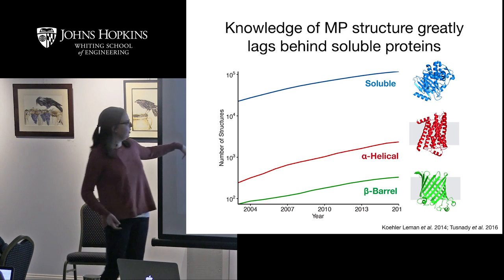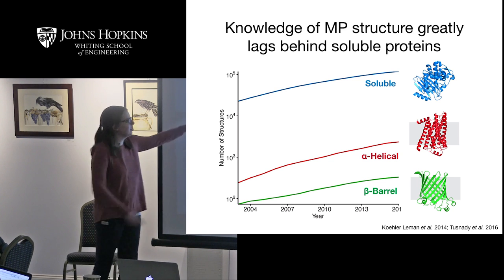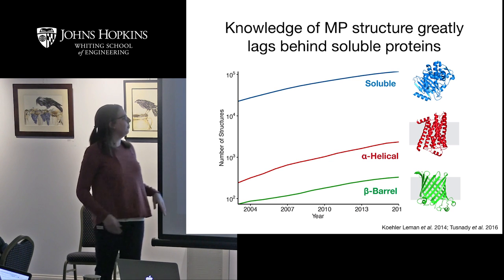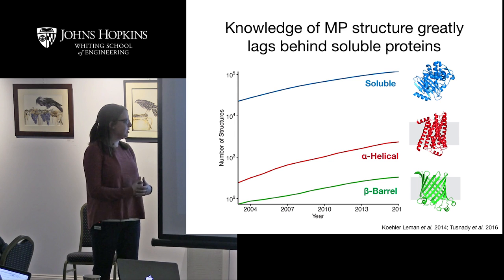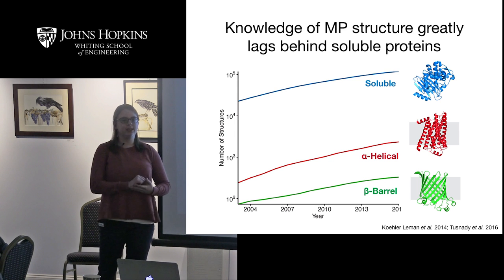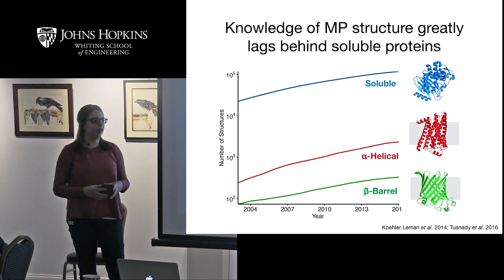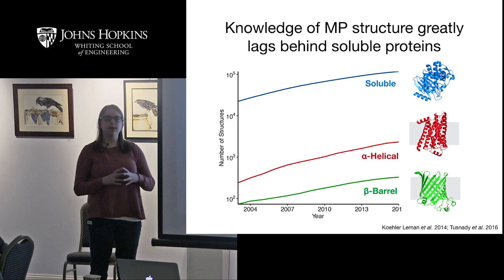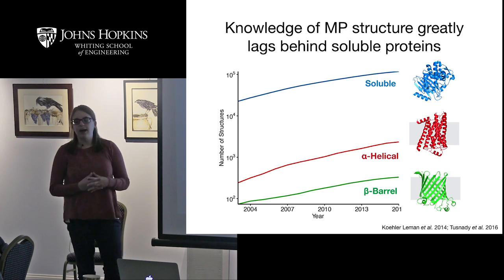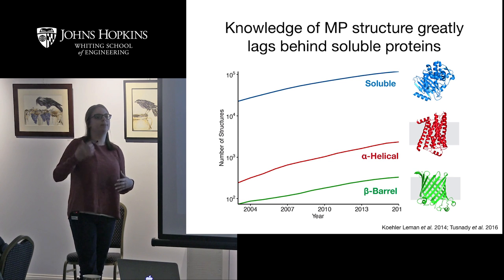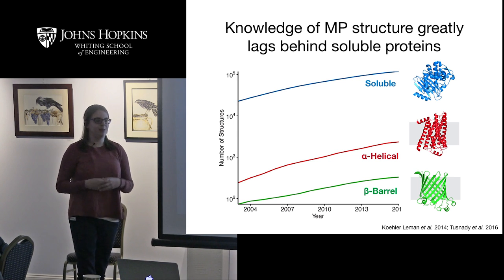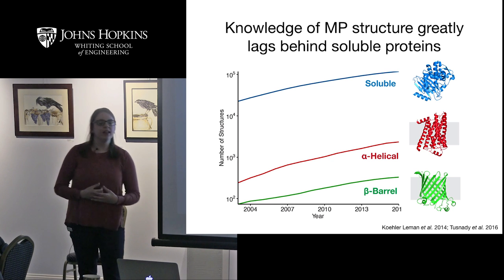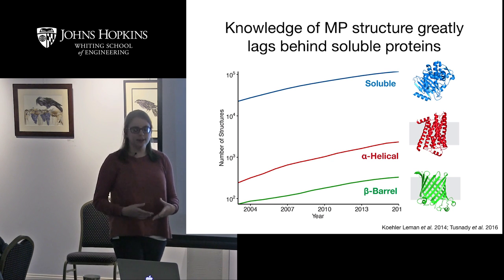On a log scale, you can see that the gap between membrane protein structures and soluble protein structures would actually be really large if plotted linearly. Alpha-helical membrane proteins like GPCRs have been well-studied by crystallography, and we've just reached about 11,000 membrane protein structures in the PDB, whereas we have almost 100,000 soluble protein structures. There's clearly a lot of work to do.